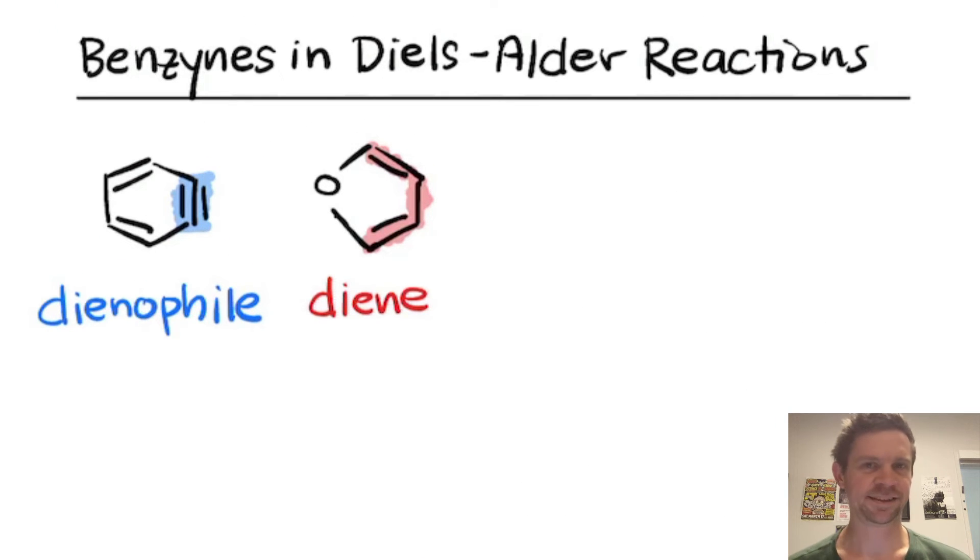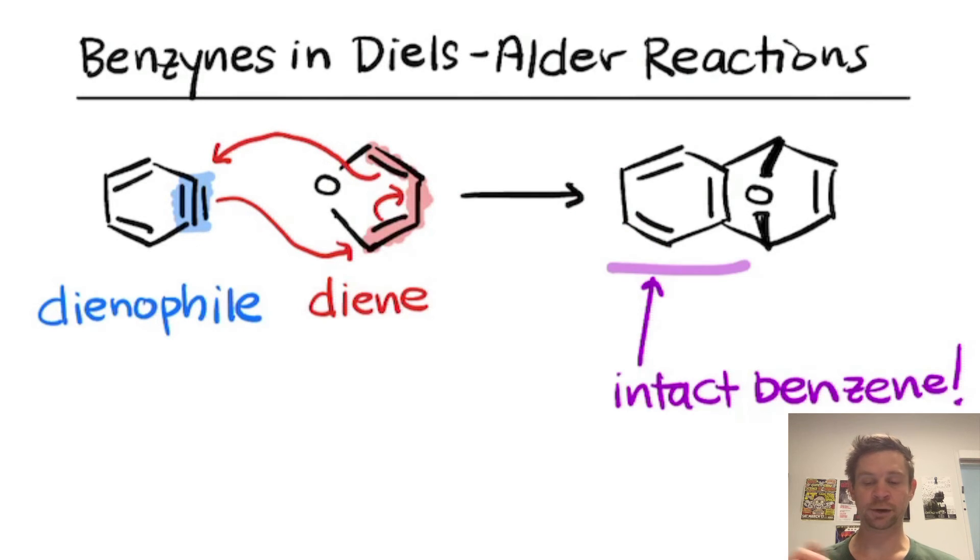I did briefly want to highlight the fact that benzynes can be used as dienophiles in Diels-Alder reactions to show you what this looks like because it actually gives a pretty structurally interesting product. Benzyne via its triple bond can act as a dienophile, and if we combine it with a diene such as furan right here, typical concerted Diels-Alder electron flow leads us to a product in which there is an intact benzene ring. It's a cyclohexadiene, just as if we had used an alkyne as the dienophile in a Diels-Alder reaction. It's just that alkyne happened to be tethered to four other carbons, leaving us with an intact benzene ring in the product. This is a pretty neat way to synthesize these cyclohexenes fused to a benzene ring, often with other substituents at these positions if a structurally complex diene is used.